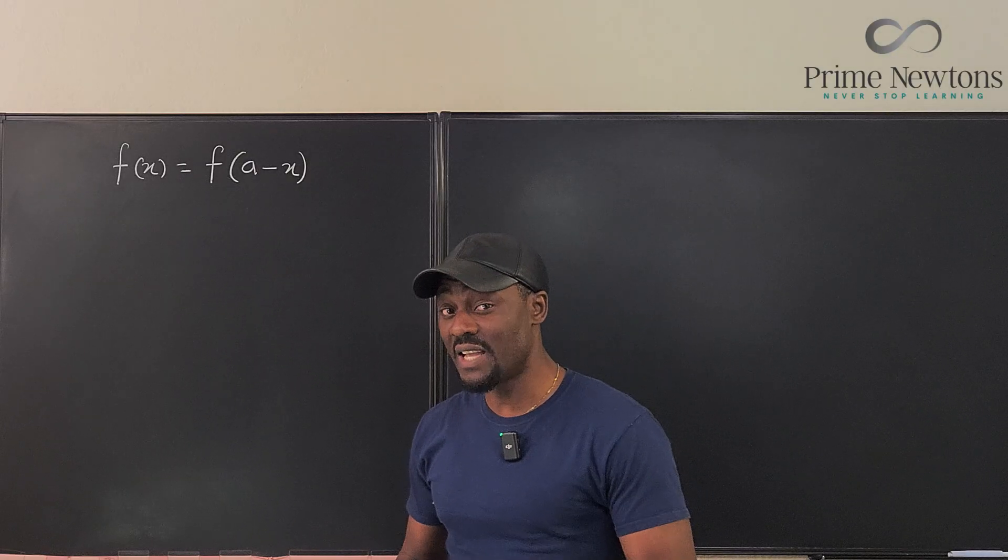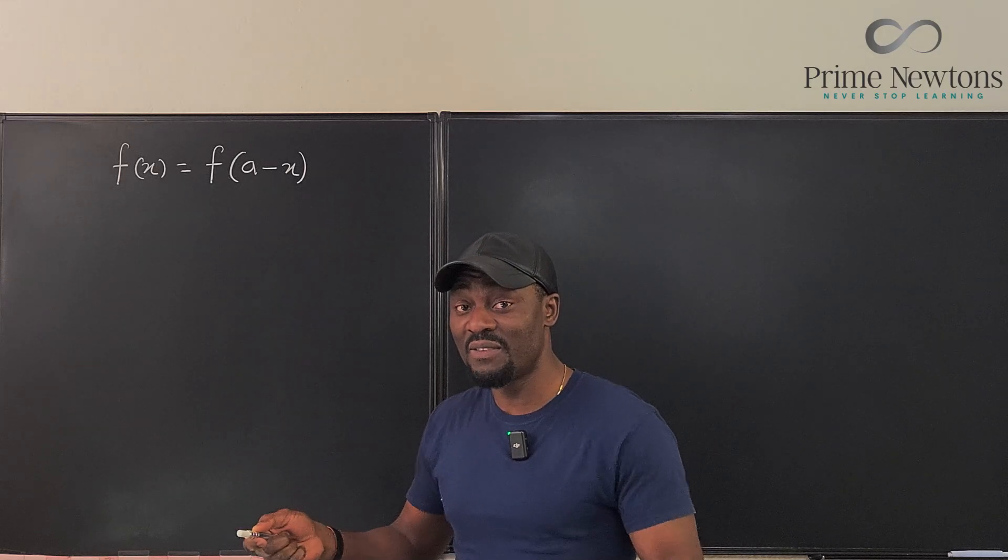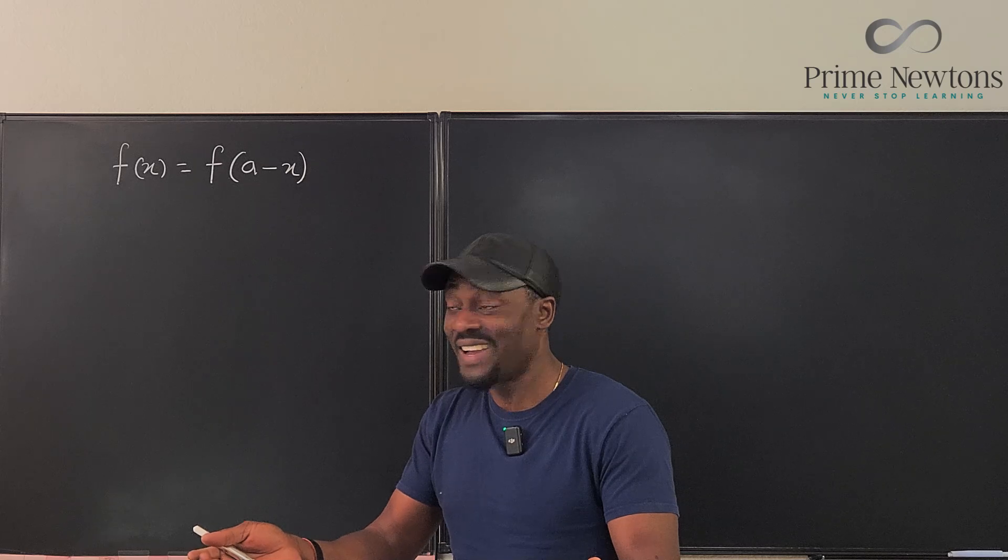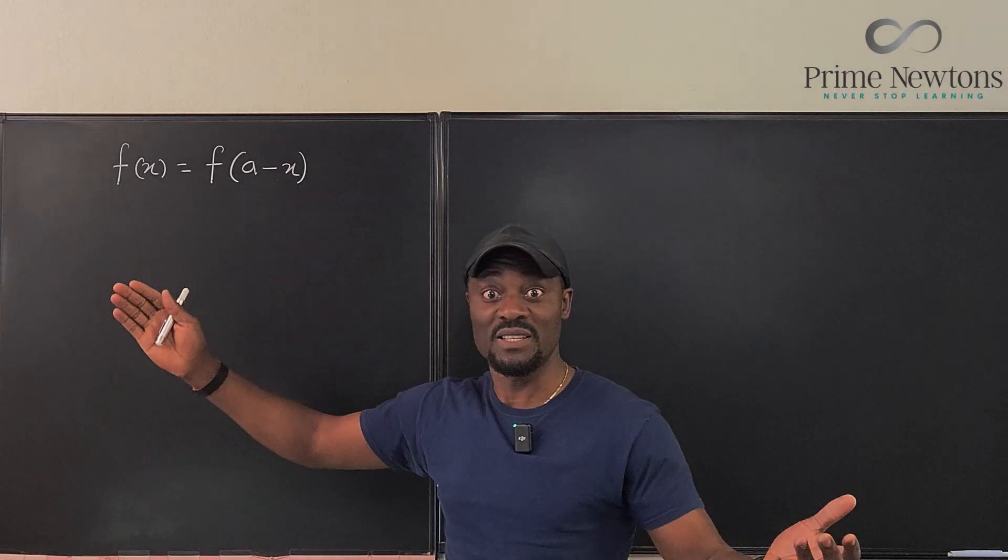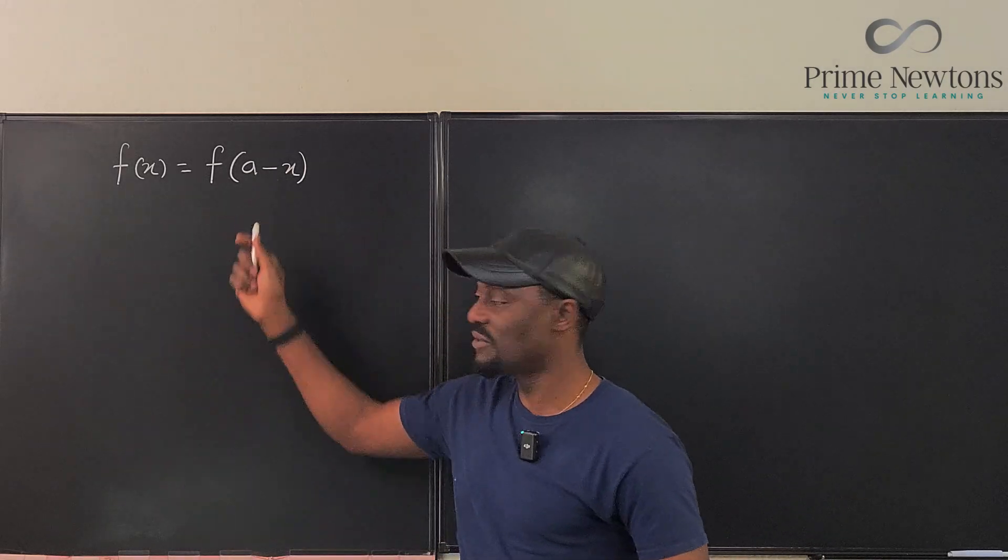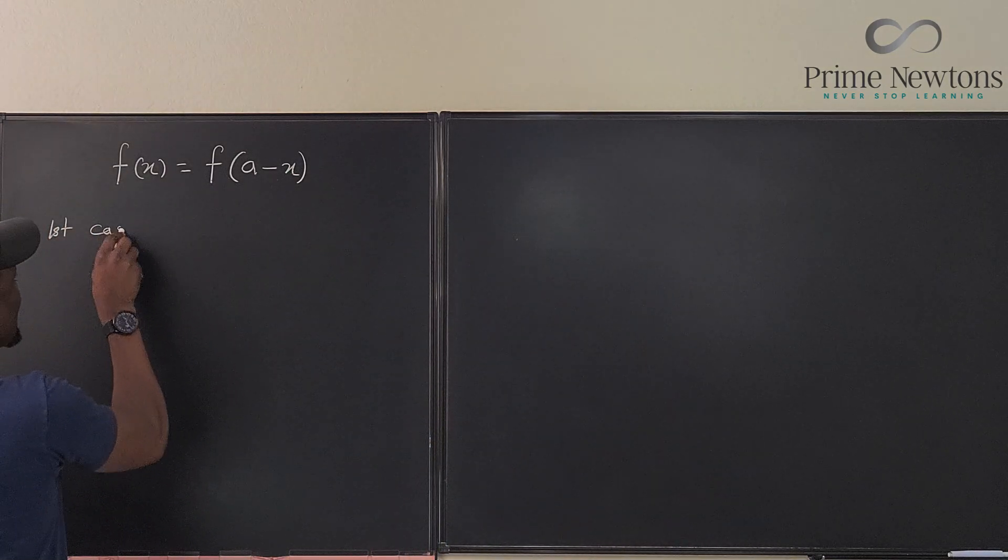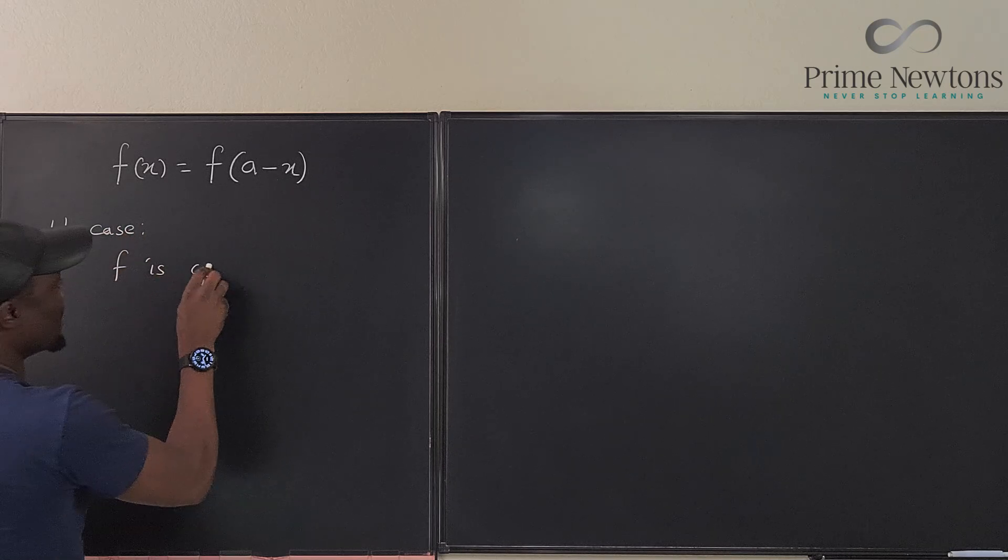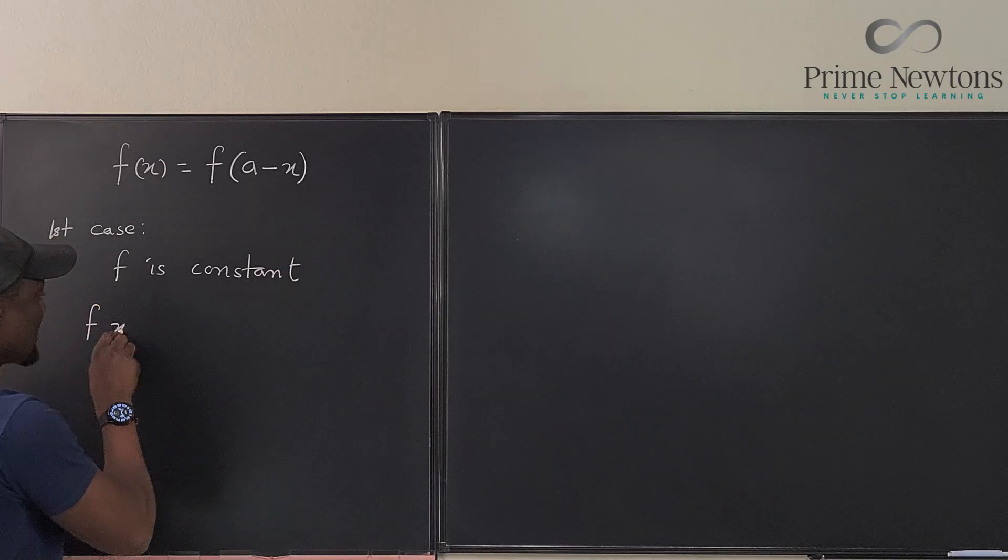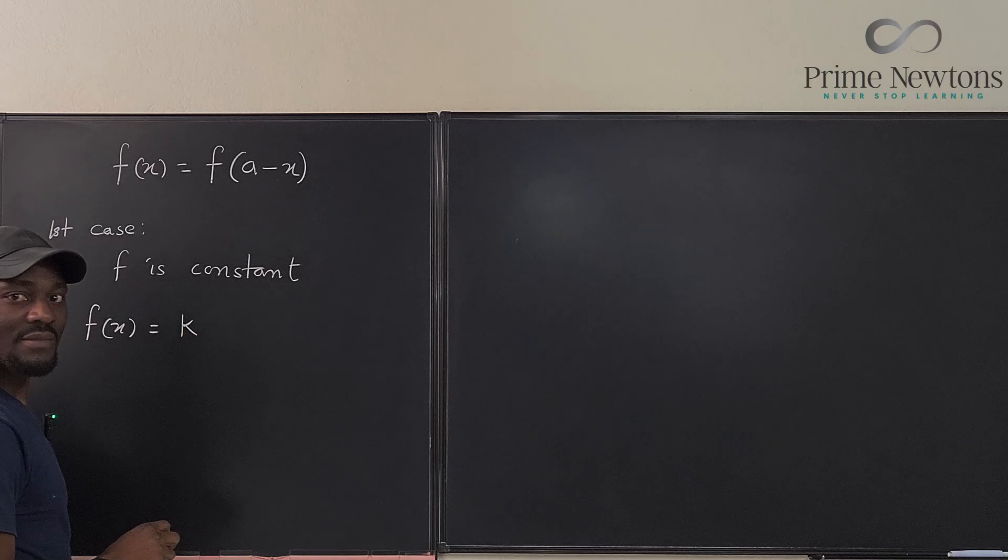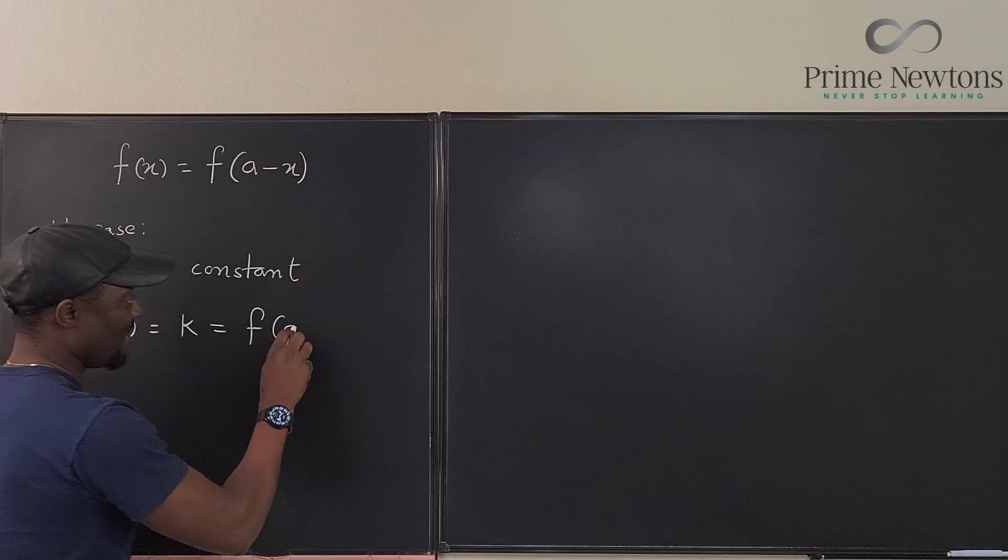So my very first instance that I was able to come up with is if it does not matter what you plug into the function, the function will give you the same answer. f(x) is always equal to f(a-x). It doesn't matter what's here or what's here, your output is the same. So a constant function has this property. So the first case is f is constant. If f(x) is equal to k, then it doesn't matter what you change the input into, it is the same thing as f(a-x).